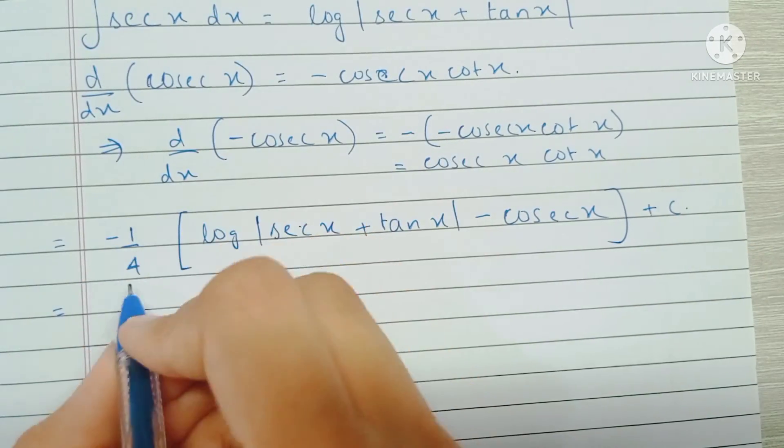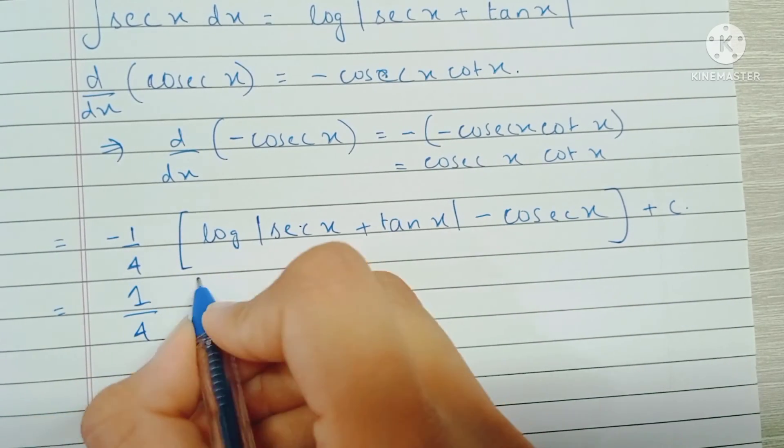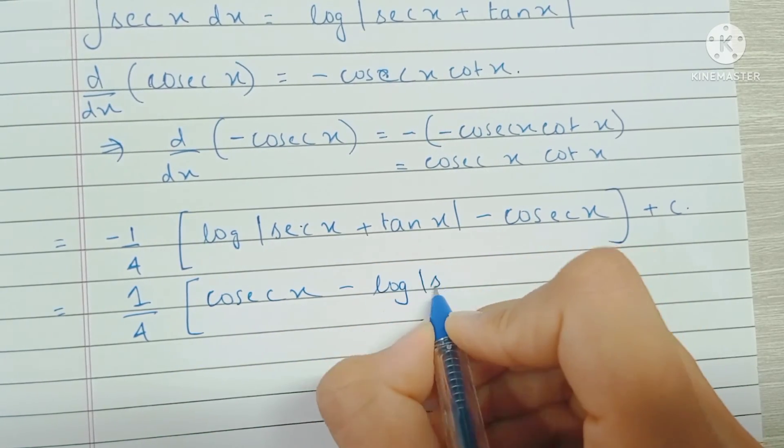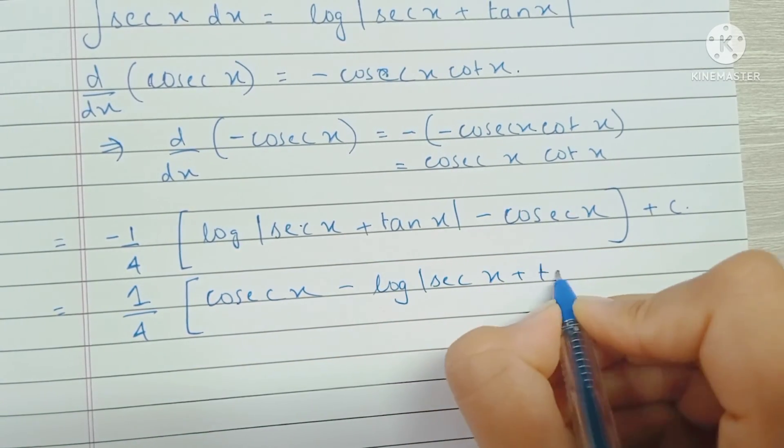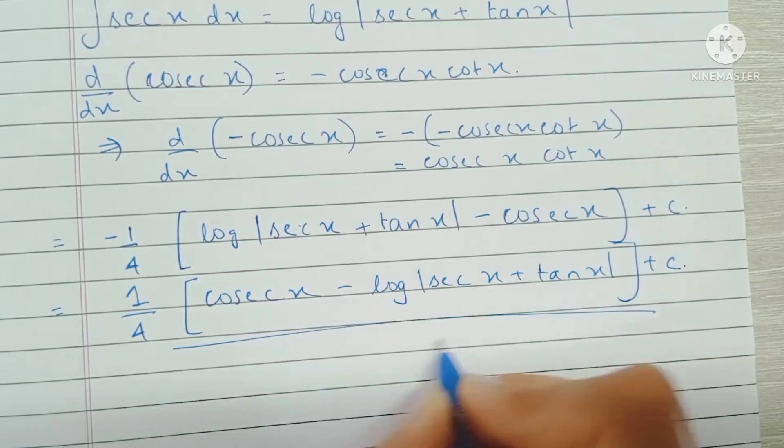I can also just take out the minus sign from here and make this positive, because minus minus becomes plus. So we have 1 by 4, we have cosec x minus log mod of sec x plus tan x plus c, and this is our final answer.